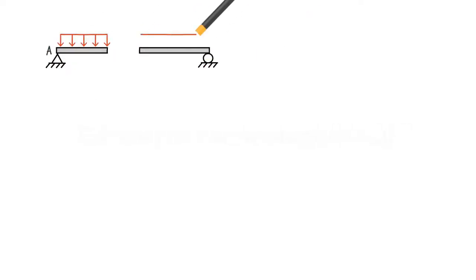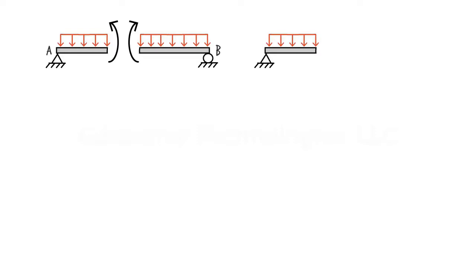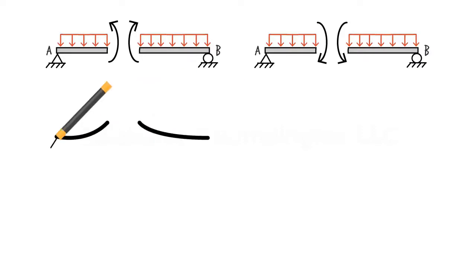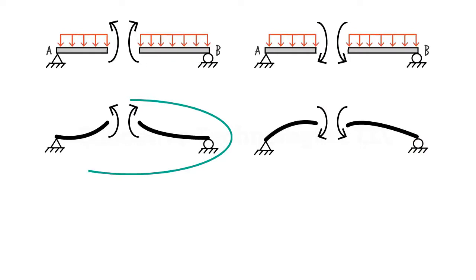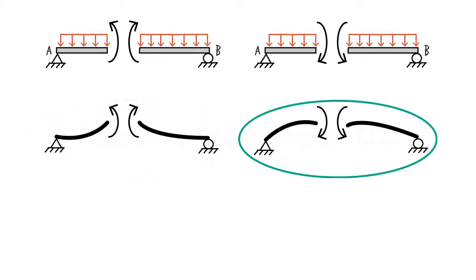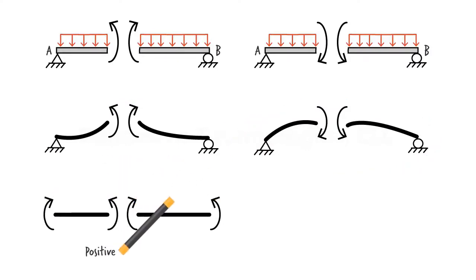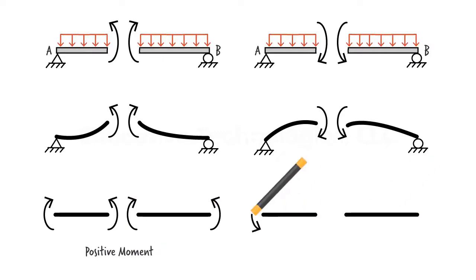Similarly, when we cut the beam, the internal bending moment can be drawn either like this or like this. In the first scenario, the bending moment tends to cause a concave up deformation. In the second scenario, the beam segments tend to deform concave down. A positive moment tends to cause a concave up bending in the beam. A negative moment tends to bend the beam concave down. Therefore, this is considered a positive moment and this is a negative moment.